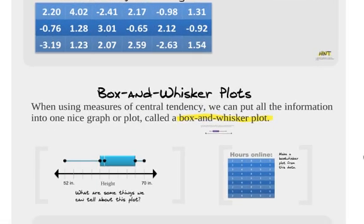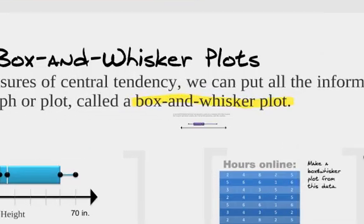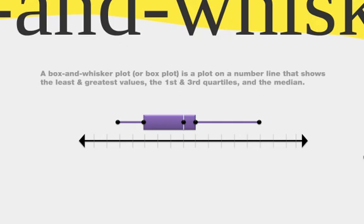All right, now box and whisker plots. Let's talk about this. All right, we can put all of this information now into a nice box and whisker plot using this central tendency stuff. So box or whisker plot is just simply this, a box plot. It's a plot on a number line that shows the least and the greatest values, the first and third quartiles, and the median. So what is what? Well, there's the box. There's the whiskers.